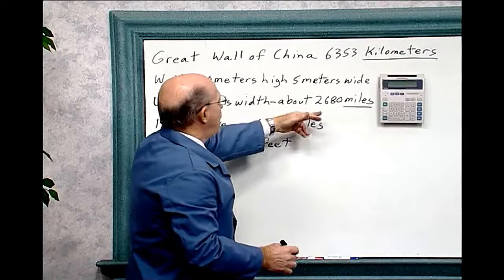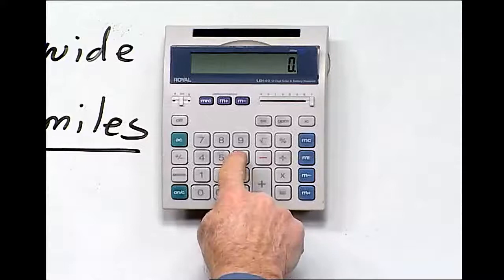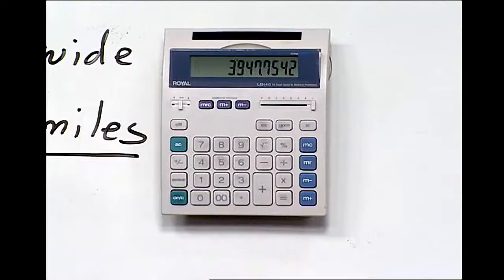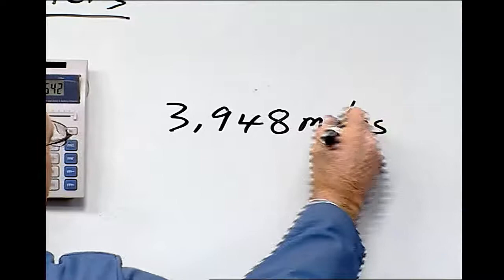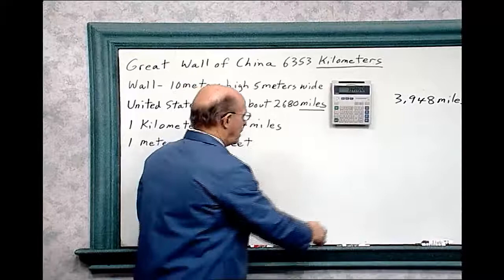So that would be 6,353 kilometers times 0.6214 equals miles. And so it's 3,940, and we'll round it up to 8 - 3,948 miles. So that gives you an idea then, and I could put a comma in these too to make it easier to read if you want to.